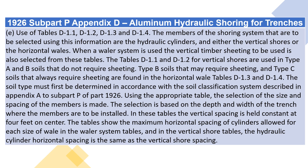The soil type must first be determined in accordance with the soil classification system described in Appendix A to Subpart P of Part 1926. Using the appropriate table, the selection of the size and spacing of the members is made. The selection is based on the depth and width of the trench where the members are to be installed. In these tables the vertical spacing is held constant at 4 feet on center. The tables show the maximum horizontal spacing of cylinders allowed for each size of whale in the whaler system tables, and in the vertical shore tables, the hydraulic cylinder horizontal spacing is the same as the vertical shore spacing.